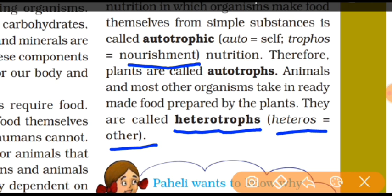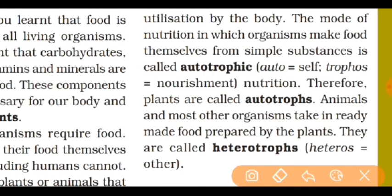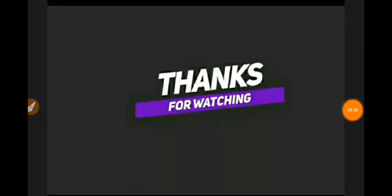Aaj ki video mein aapne nutrition ke baare mein padha — plants aur animals nutrition ke baare mein. Nutrition two types ka hota hai: autotrophic and heterotrophic. Autotrophic means jo khud apna bhojan prepare karte hain; heterotrophic means jo apna food khud prepare nahin karte hain. So next video mein hum isse aage padhenge. That's all for today's video.